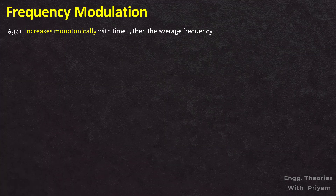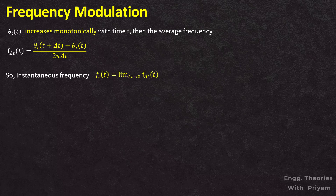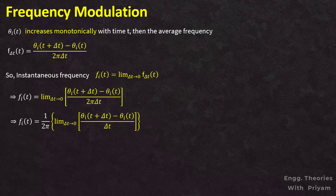If θi(t) increases monotonically with time, the average frequency over a small interval from t to t + Δ is given by f_Δ = [θi(t + Δ) − θi(t)] / (2πΔ). The instantaneous frequency fi(t) is calculated by making Δ approach zero: fi(t) = lim(Δ→0) f_Δ(t). Substituting the expression for f_Δ gives fi(t) = (1/2π) · lim(Δ→0) [θi(t+Δ) − θi(t)] / Δ.